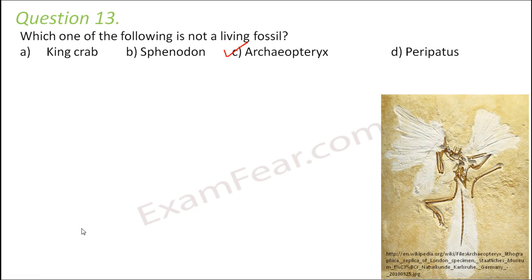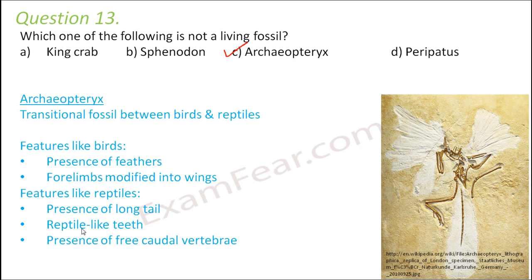So what is archaeopteryx? It is a transitional fossil that existed between birds and reptiles. It acted as a connecting link because it has certain features like birds — presence of feathers and forelimbs modified into wings — whereas certain features like a long tail, reptile-like teeth, and presence of free caudal vertebrae made them look like reptiles.